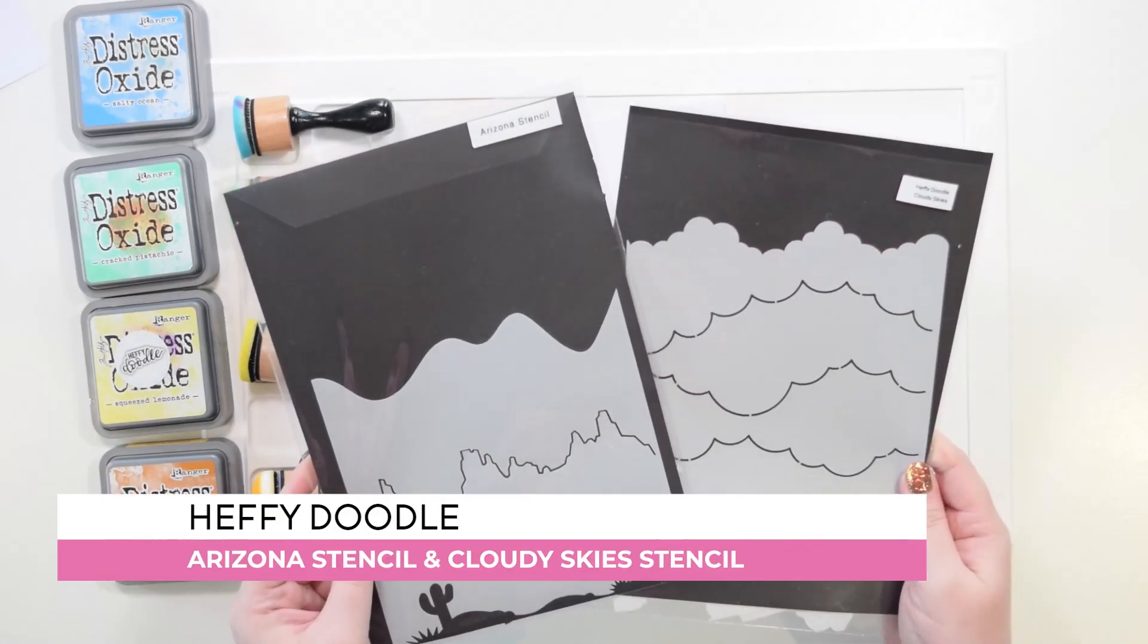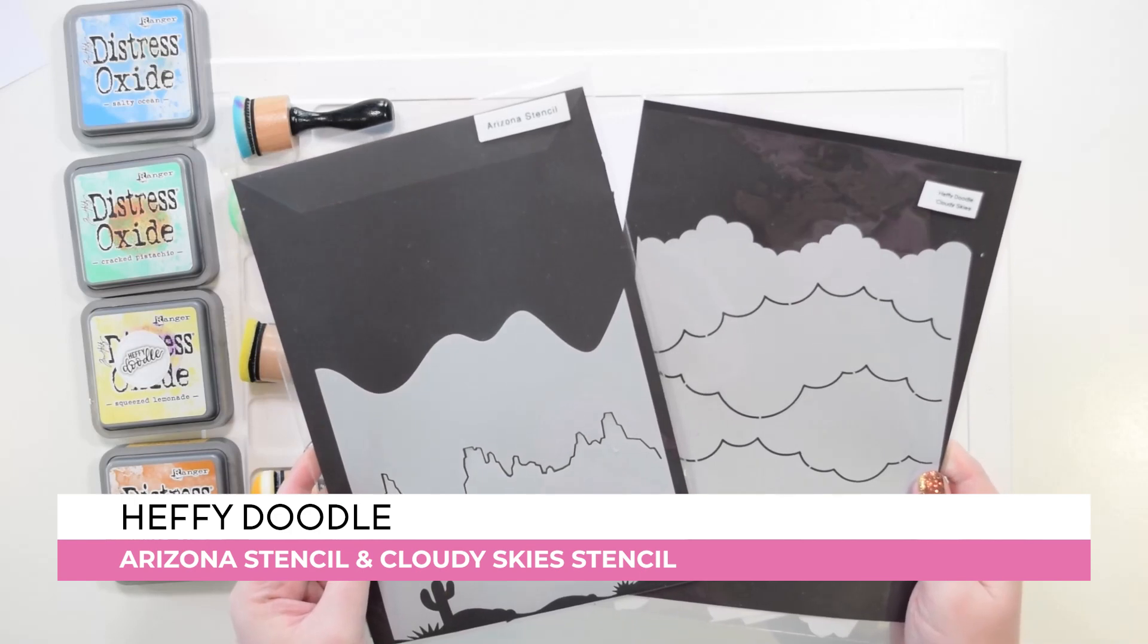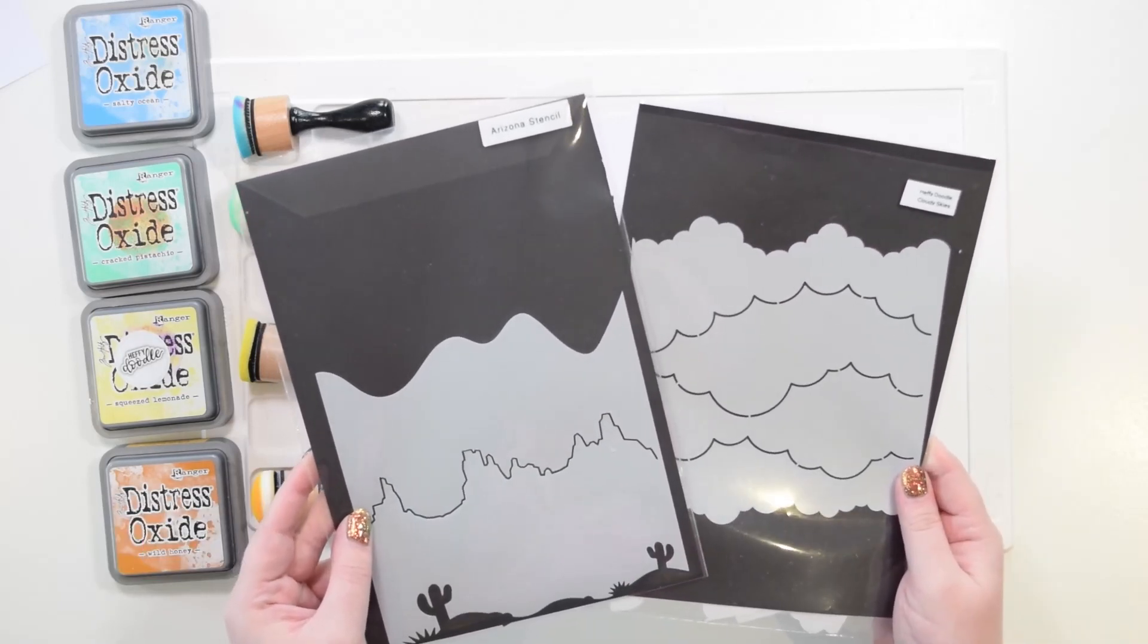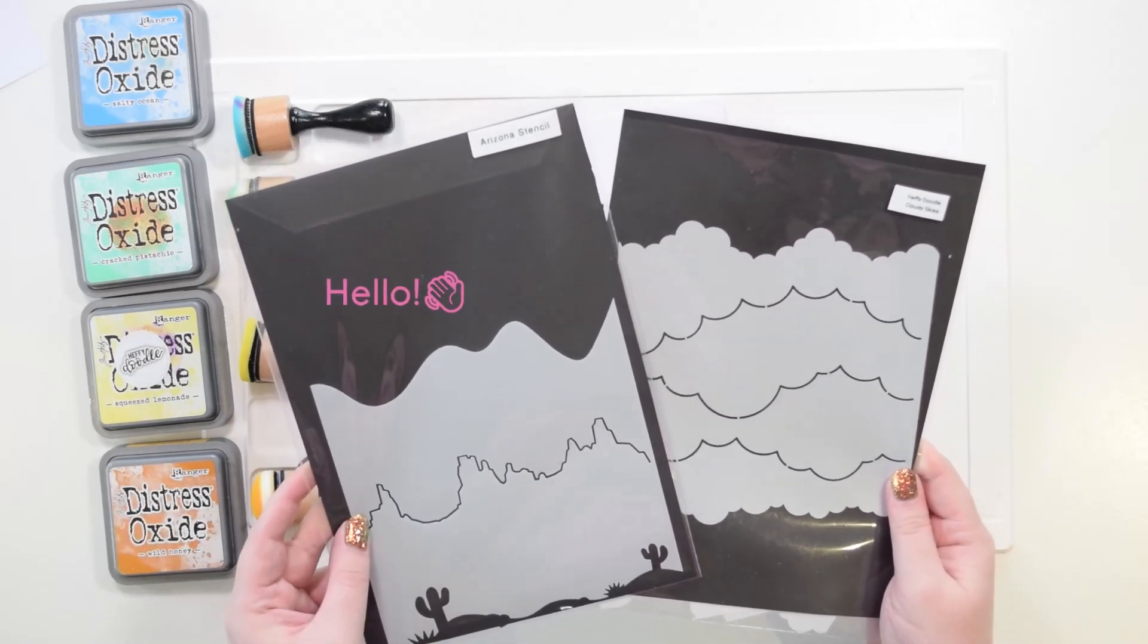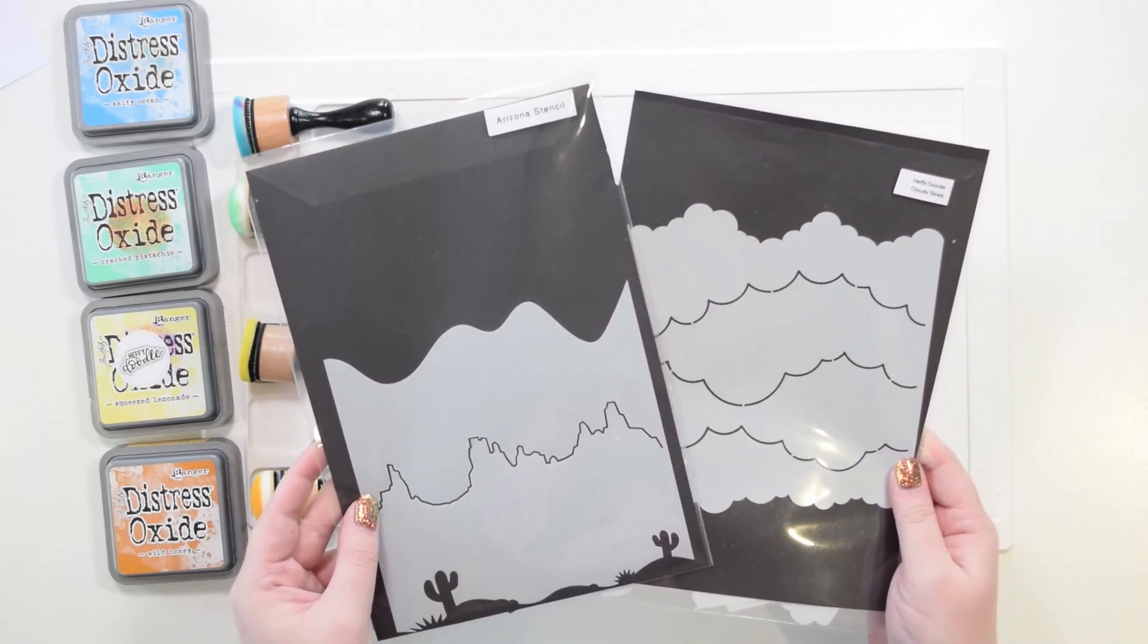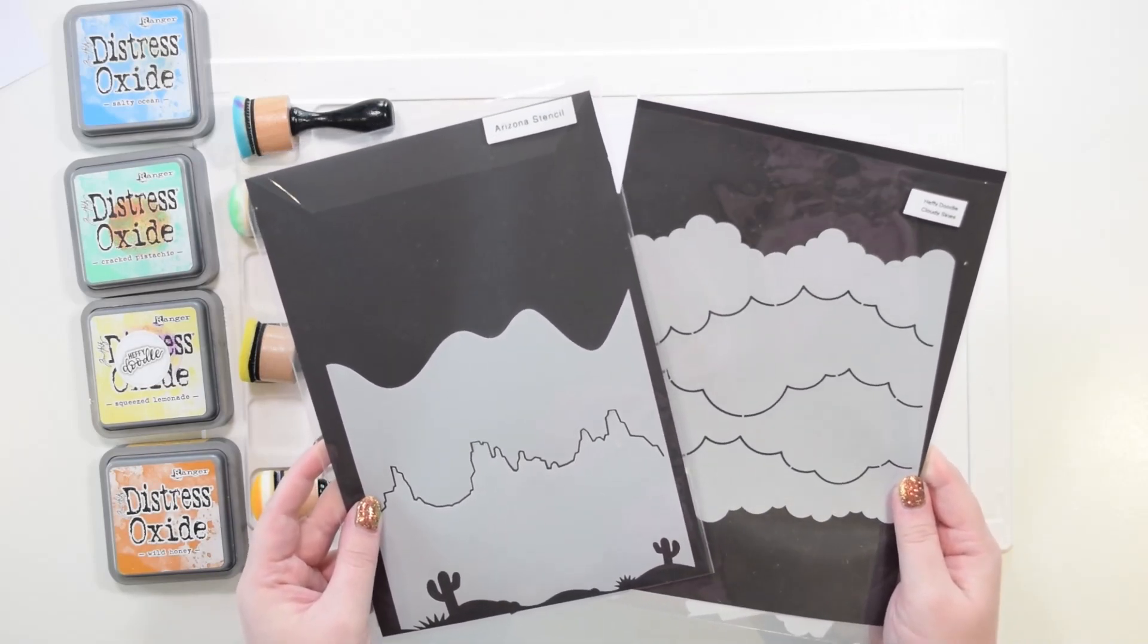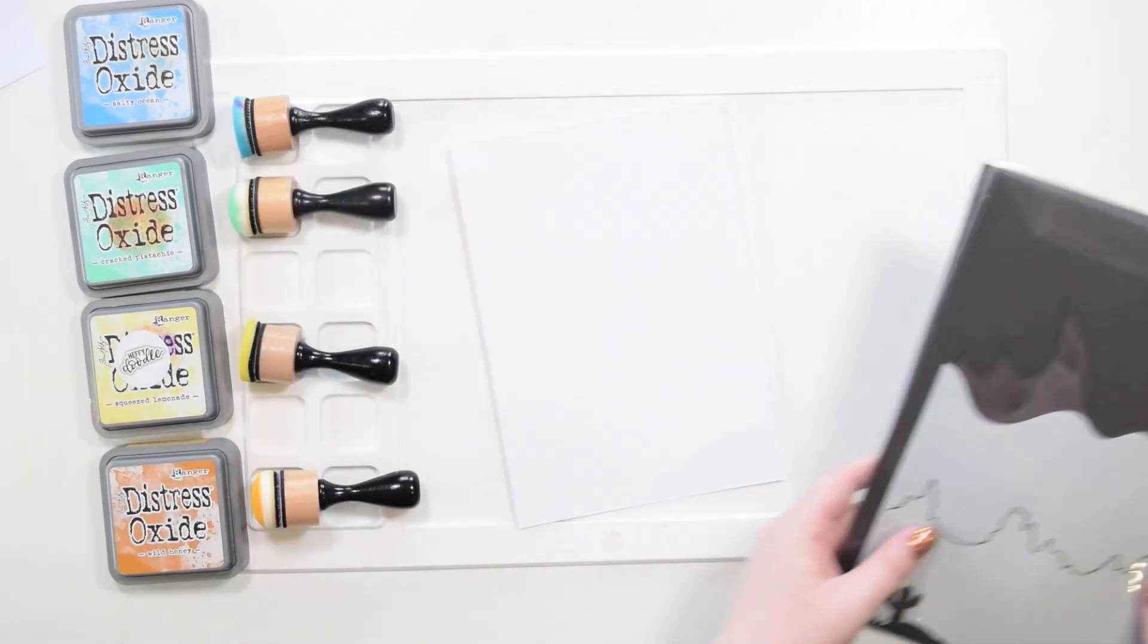I've got a piece of watercolor cardstock here that I'm going to use to create my background with the Arizona stencil and the Cloudy Skies stencil. It's really easy to build a scene with both of these two stencils, and I'm going for a wonderful mountaintop for my lovely llamas.